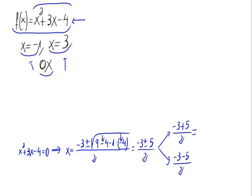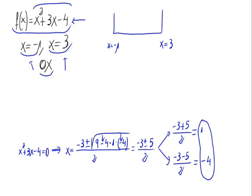That gives us x = 1 and x = -4. The value x = -4 is outside the interval where we want to calculate the area, so we don't have to take it into account. The value x = 1 is right in the middle of our interval. So let's study the sign of the function on [-1, 1] and on [1, 3].